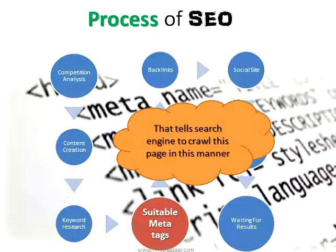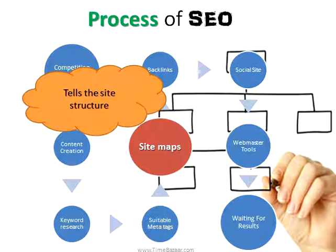Then comes suitable meta tags — description tag, keyword tag, and title tag. These tags tell the search engine how to crawl your page. Then comes the sitemap. A sitemap tells the structure of the site to the search engine. Because the search engine is a bot, not a human, it cannot properly analyze your site unless you have a sitemap.